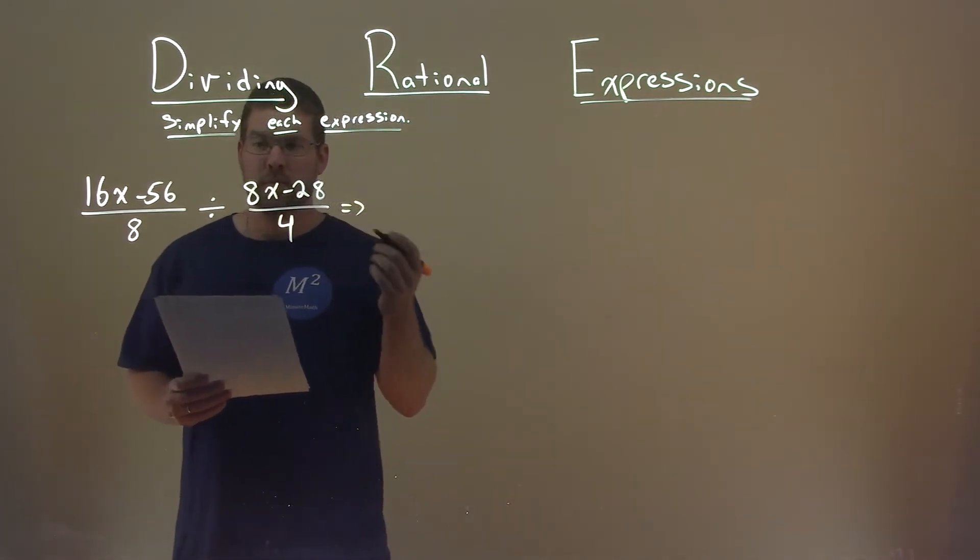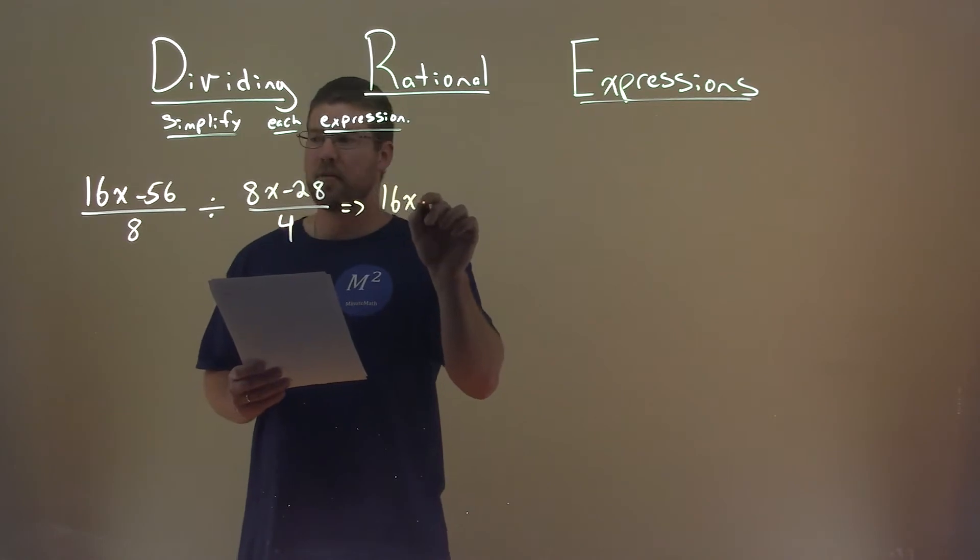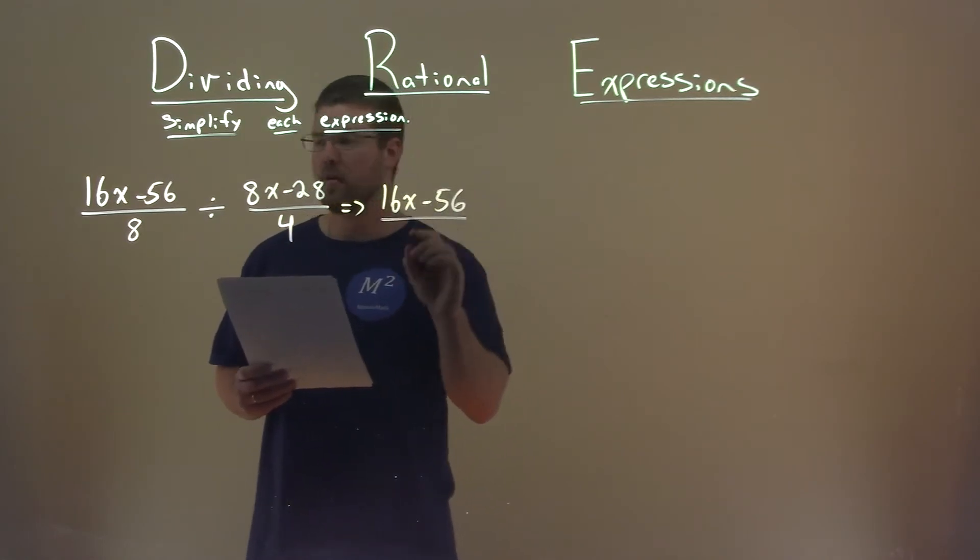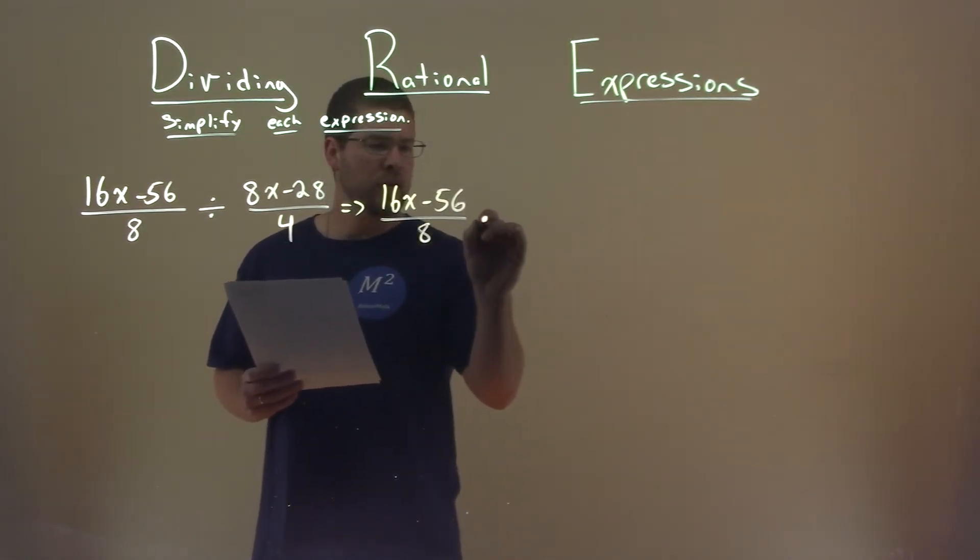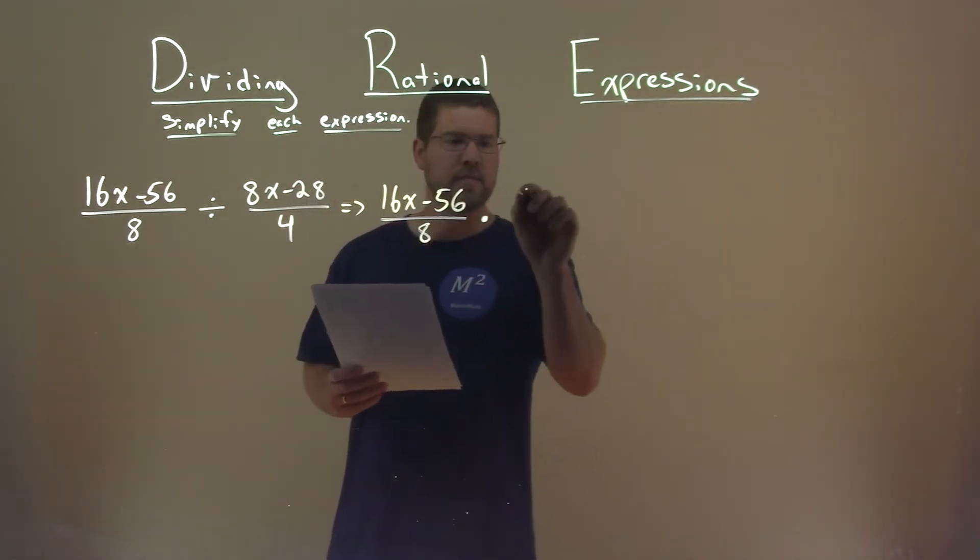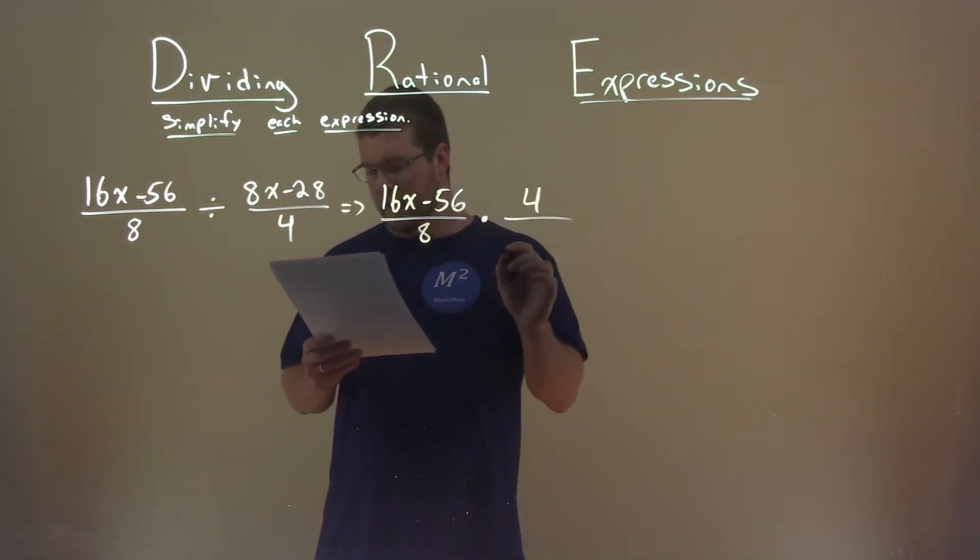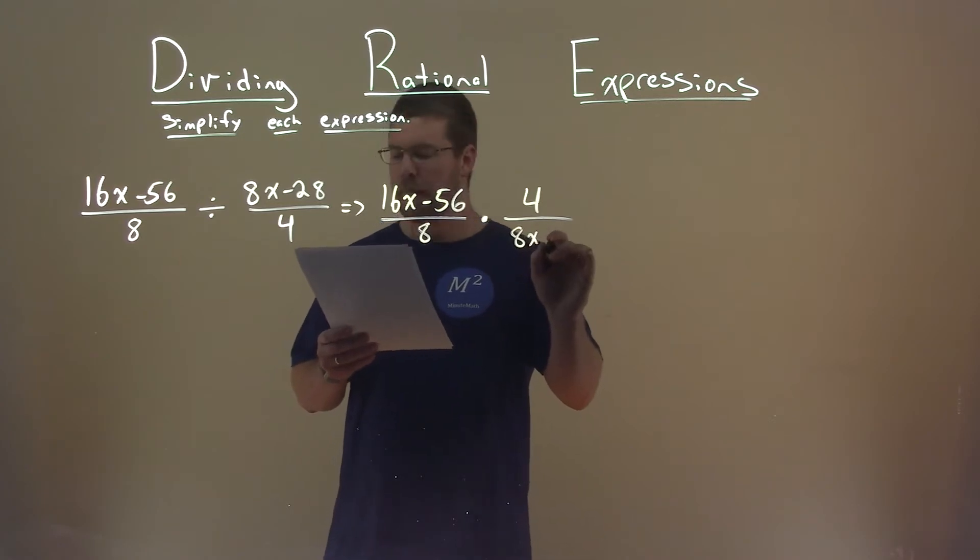I'm going to rewrite this as a multiplication problem. 16x minus 56 over 8 stays there. But instead of dividing, we're multiplying, and we're going to flip the second fraction. 4 is in the numerator, and the denominator is 8x minus 28.